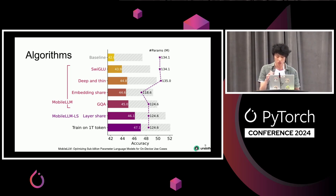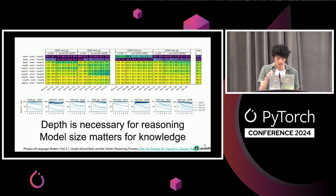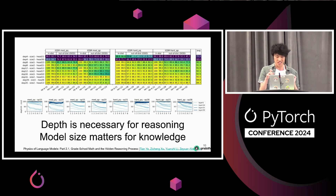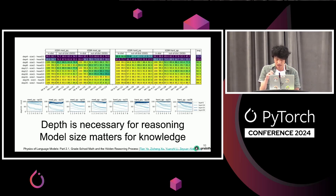Now on to algorithms. There are lots of algorithms to make training faster. For example, using SwiGLU and making deep, thin networks can give high accuracy without changing the number of parameters. Depth is necessary for reasoning and model size matters for knowledge — the deeper your network, the more reasoning it can do; the larger the model, the more knowledge capacity. So you want to make your model as thin as possible, make it very deep, and it can still have the same time complexity while being good for reasoning.